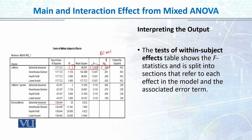हमारा जो gender वो between-subject था, उसका हम अलग table देखेंगे। Within-subject variable में हमारा caffeine देगा और फिर हमारे पास वो interaction देगा caffeine and gender के साथ। Interaction के लिए भी हमारी sphericity की assumption meet हो रही है क्योंकि हमारी non-significant value है। हम report करेंगे F-value, उसकी degrees of freedom, और उसका p-value।